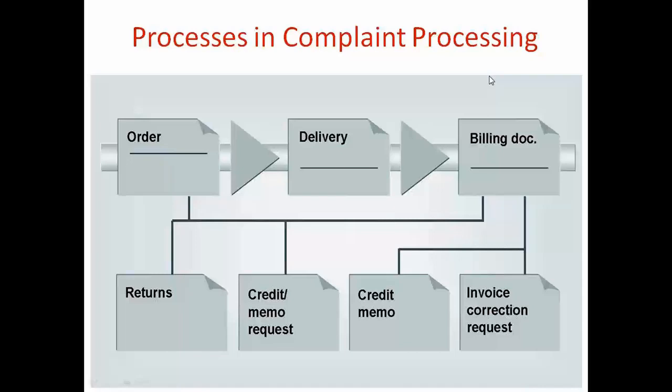The third case could be invoice correction. They received an invoice and they are saying the price mentioned in the invoice is incorrect, or the quantity mentioned is incorrect. For example, they received 10 pieces but the billing document is saying 12 pieces. So these are the different types of complaints.